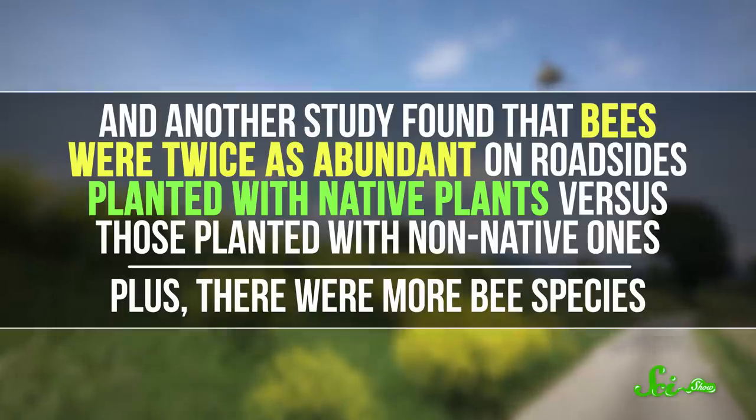Plus, there were more bee species. So, planting insect-friendly vegetation along roads can attract all kinds of pollinators and support their diversity.